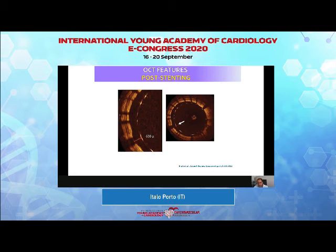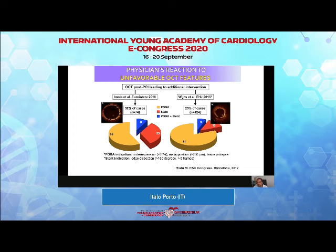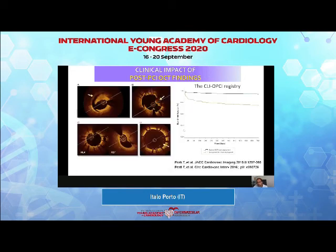Measuring malapposition is quite important to obtain an optimal stent result. When operators see unfavorable OCT features, most often they perform additional balloon inflations, and more rarely they place another stent. Obtaining optimal OCT results — defined by absence of irregular protrusion and larger minimal stent area — is associated with better prognosis. Francesco Prati's results show that optimal OCT findings translate to optimal long-term outcomes.